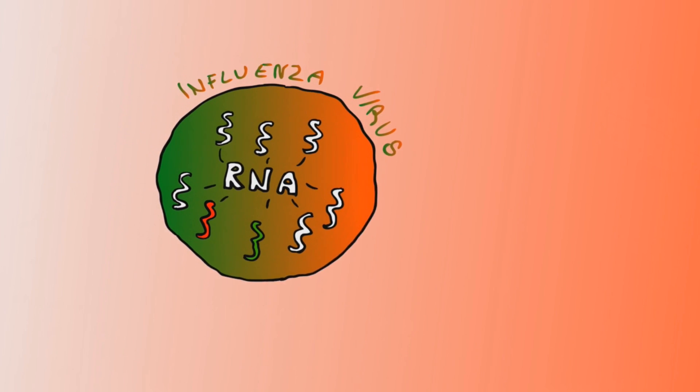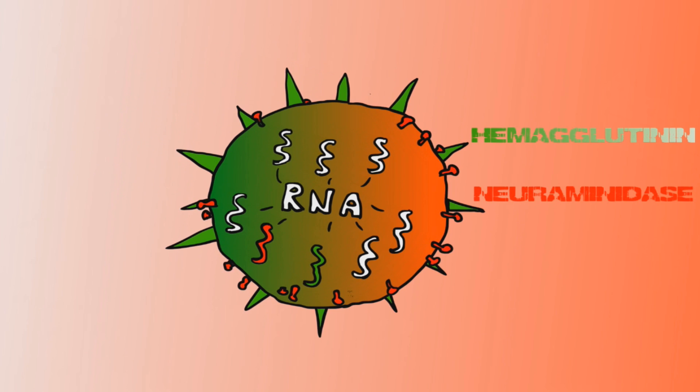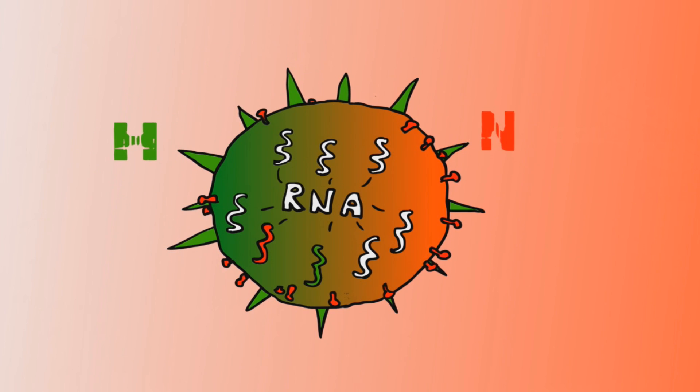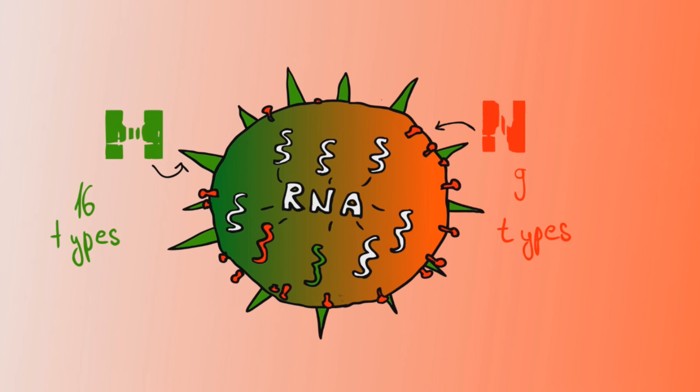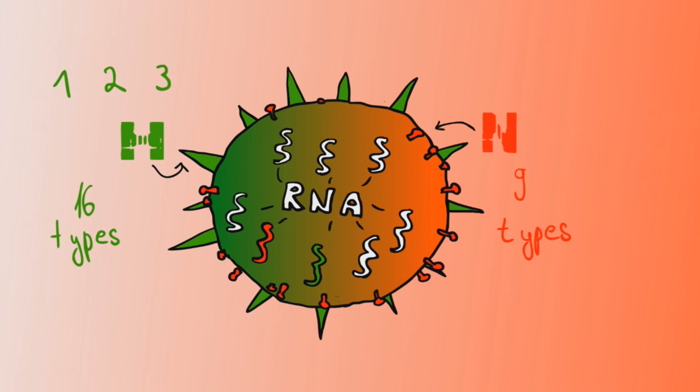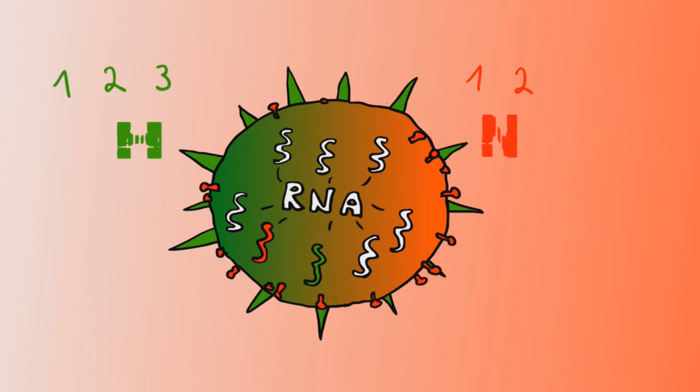All of these viruses have proteins called hemagglutinin and neuraminidase on their surface. Because they have complicated names, let's just call them H and N. There are 16 types of H and 9 types of N, though usually just H1, 2, and 3, and N1 and 2 usually infect humans.